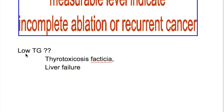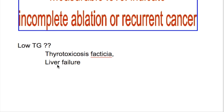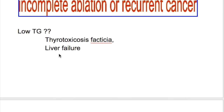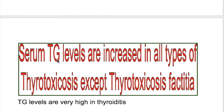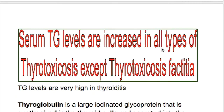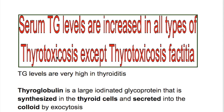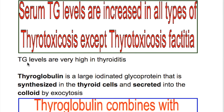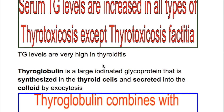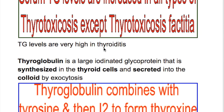What are the conditions when we have a low thyroglobulin level? Low levels are seen in thyrotoxicosis factitia and liver failure. Serum thyroglobulin levels are increased in all types of thyrotoxicosis except thyrotoxicosis factitia. Thyroglobulin levels are very high in thyroiditis.